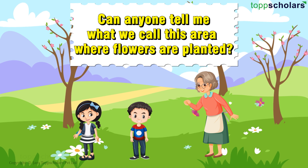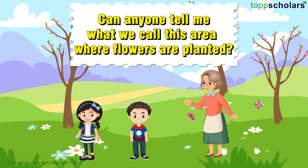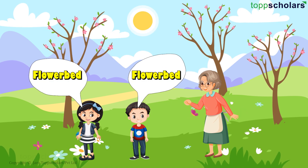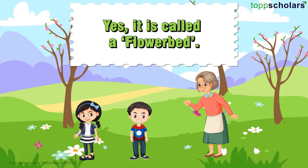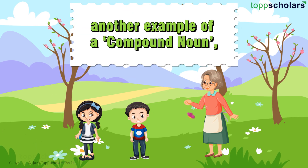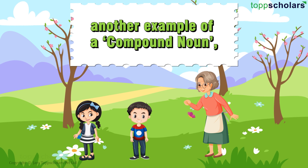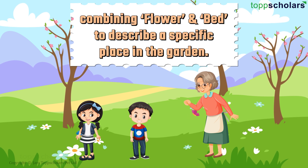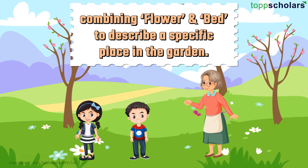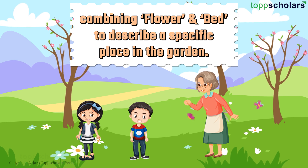Can anyone tell me what we call this area where flowers are planted? A flower bed. Yes, it is called a flower bed — another example of a compound noun, combining flower and bed to describe a specific place in the garden.